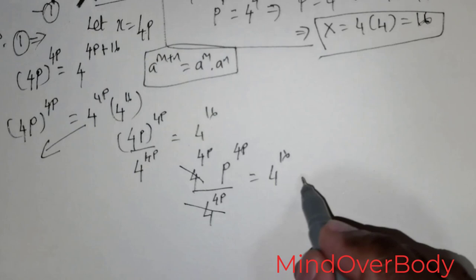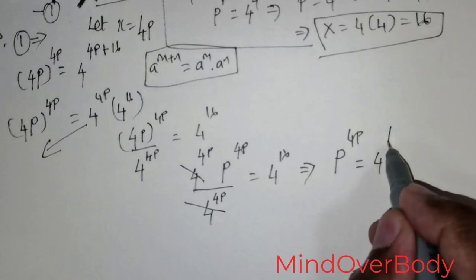I can rewrite 4p raised to the power 4p as 4 raised to the power 4p times p raised to the power 4p. After cancelling 4 raised to the power 4p from numerator and denominator, I now have p raised to the power 4p is equal to 4 raised to the power 16.